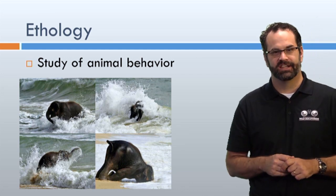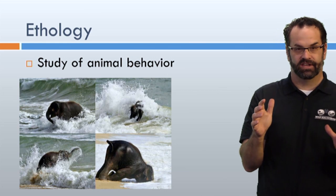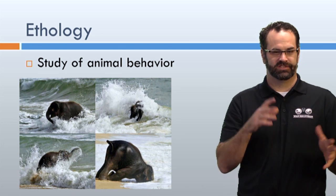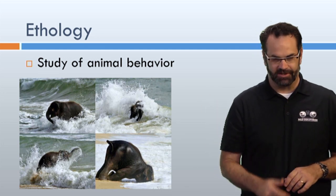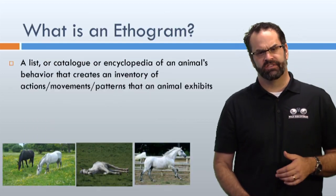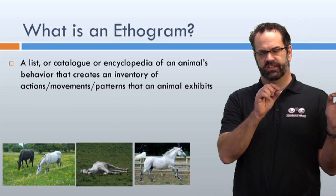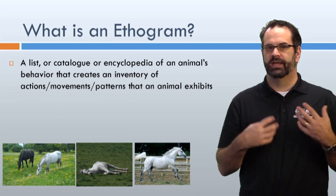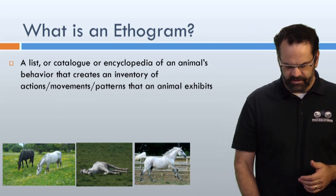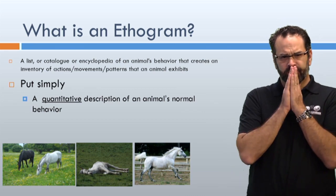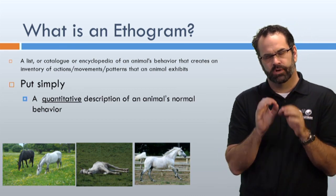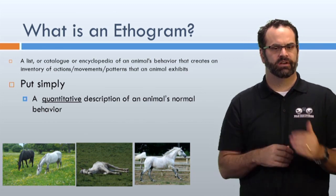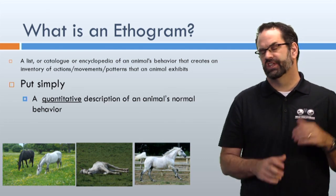Ethology is the science of studying animal behavior. I love elephants, so I love this picture of a calf playing on the shore of a beach and then face-planting at the end. Ethology is the study of animal behavior, and then we have the ethogram — really a catalog or encyclopedia of many behaviors. The key way to think about an ethogram is that we're quantifying behavior — applying values so we can run statistics and figure out if behaviors are significant.